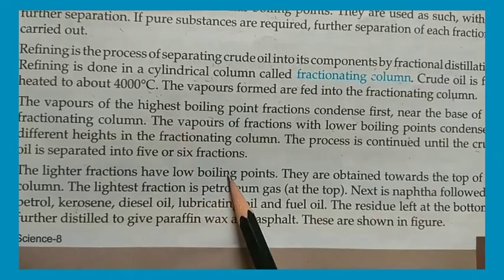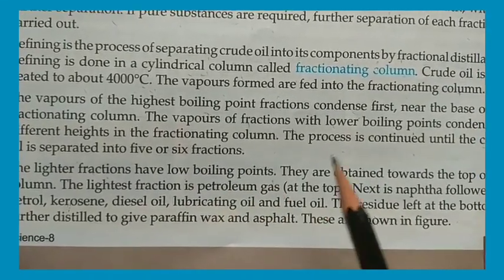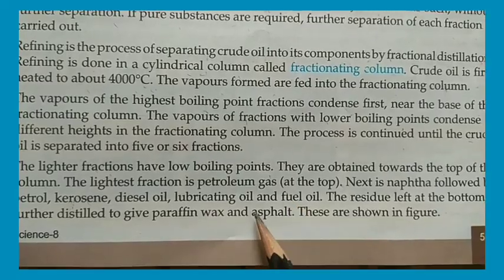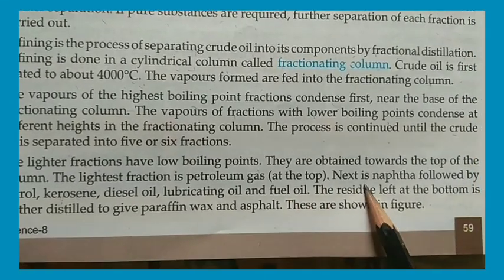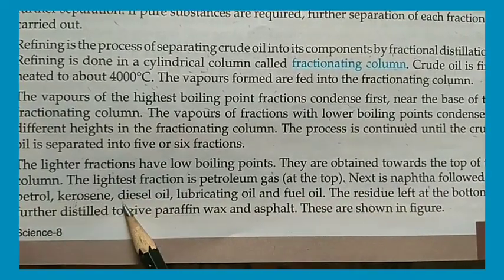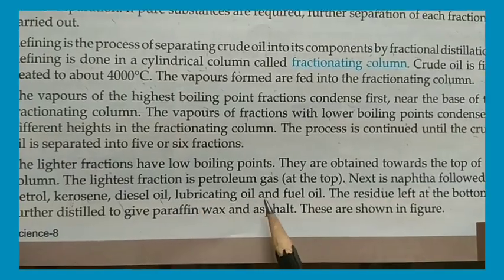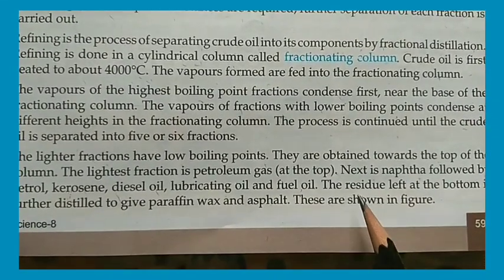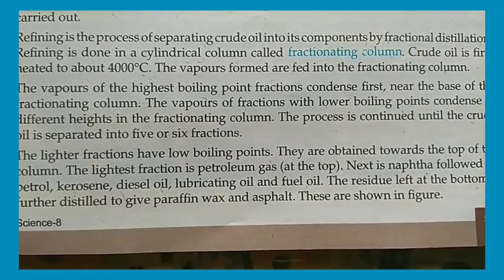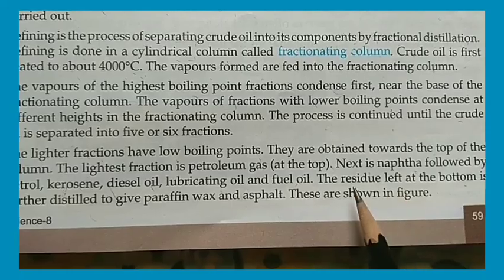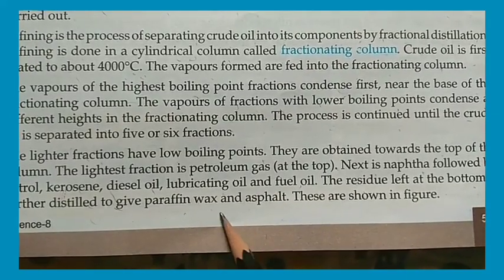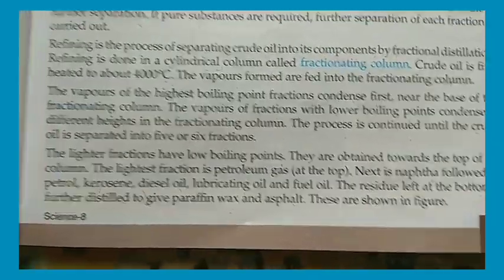Lighter fractions have lower boiling points and are obtained towards the top of the column. The highest fraction — petroleum gas — is at the top, and the lowest is at the bottom. The sequence from top to bottom is: petroleum gas, naphtha, petrol, kerosene, diesel, and lubricating oil. The residue left at the bottom is further distilled to give paraffin wax and asphalt.